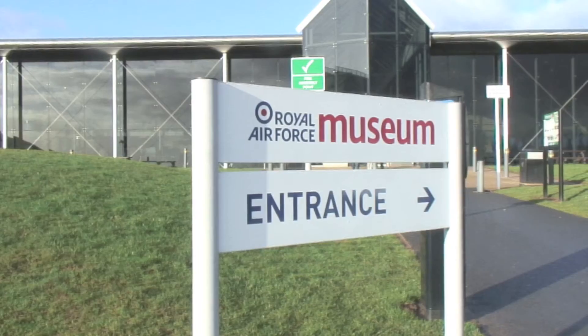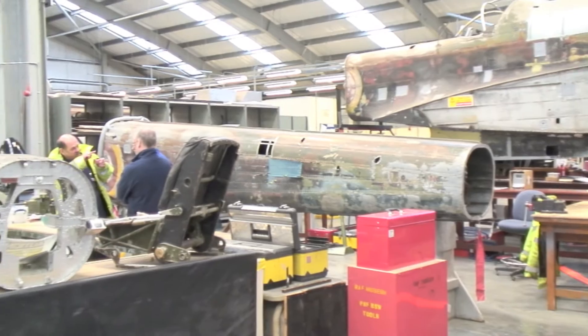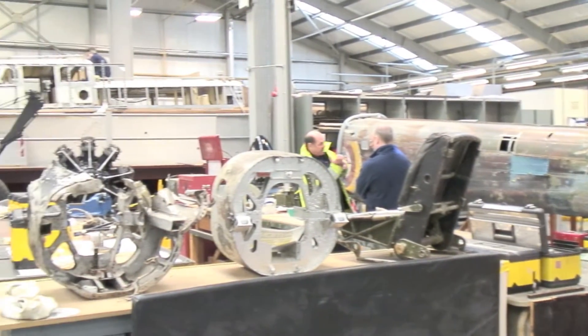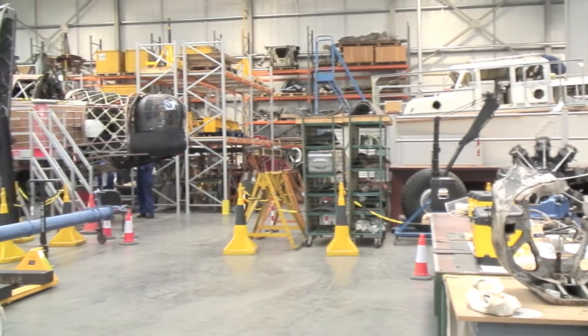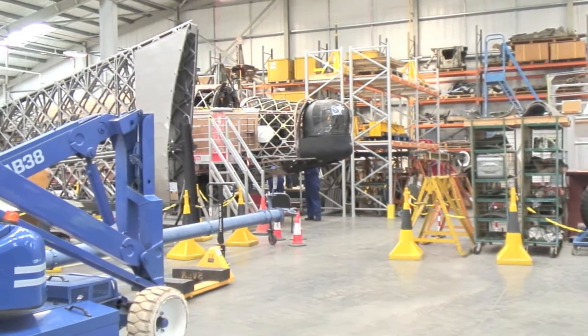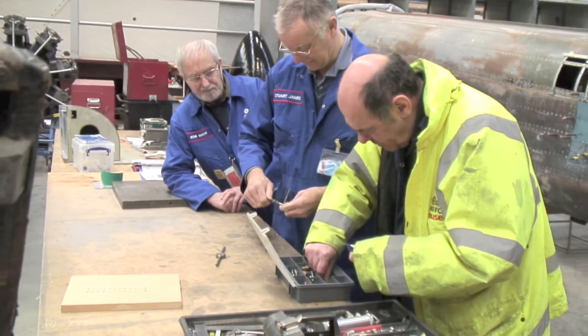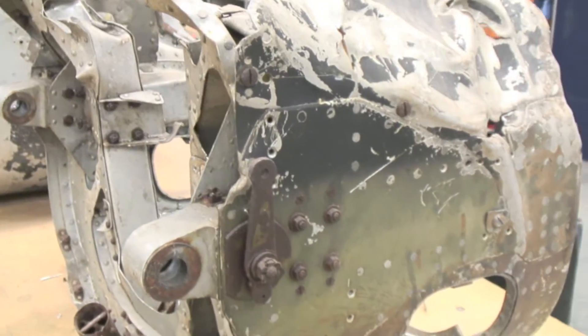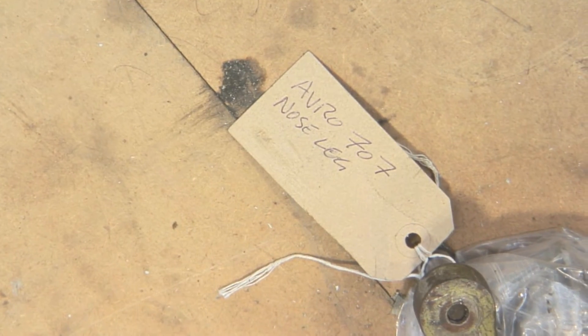It needs mending. This is the Conservation Centre at the RAF Museum at Cosford, where engineers work on restoring and preserving our aviation heritage. Think for a minute of the range of materials they are faced with repairing. Everything from old leather to corroded metal. And not just any metal, but alloys. And alloys with a history.